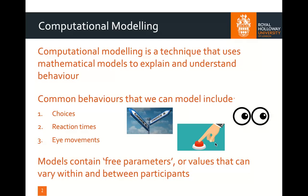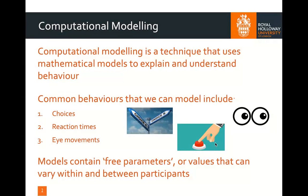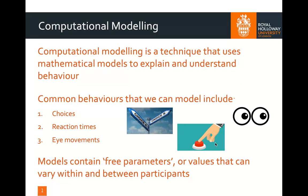What's important about these models is that they contain what is known as free parameters, which are values that can vary within and between participants. These free parameters are aspects of the model that aren't set by the task necessarily, but are actually set by participants' behavior. And these can be really informative in understanding the kind of mechanistic process behind some participants' behaviors.